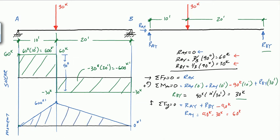A few observations: when you have only point loads, the shear diagram has horizontal lines, and the moment diagram has straight slope lines. The number of horizontal segments depends on how many point loads you have. Let's move to the next example with a uniform load — same beam, but with 2 kips per foot applied.